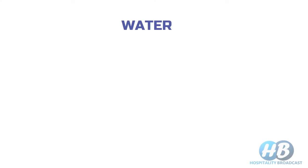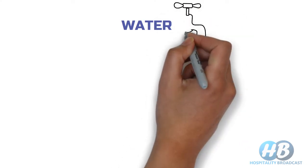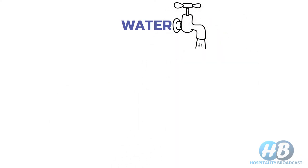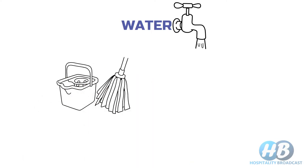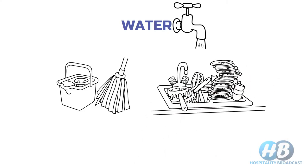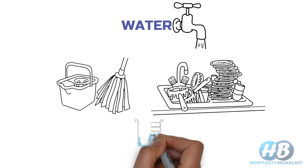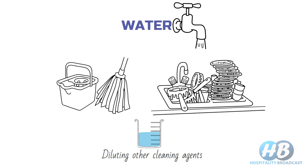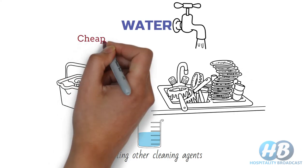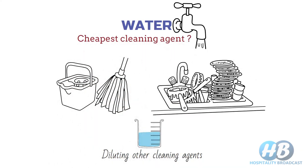The first cleaning agent is water — the most widely and commonly used cleaning agent. You use it for washing or mopping floors, surface cleaning, car cleaning, clothes washing, utensil cleaning, etc. It is also used as a solvent for mixing or diluting other cleaning agents. And the answer to which is the cheapest cleaning agent is, of course, water.